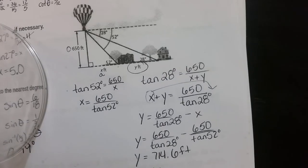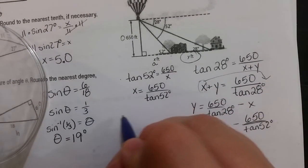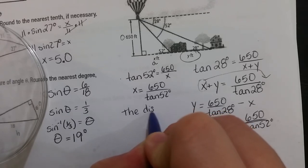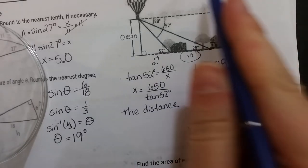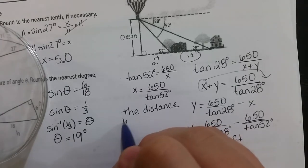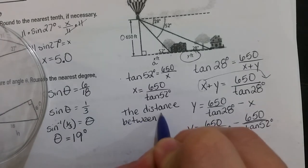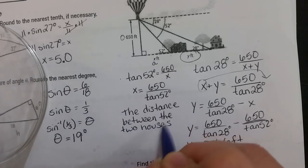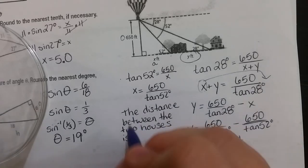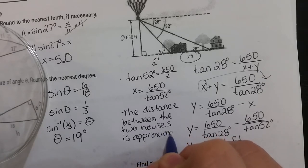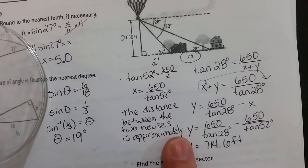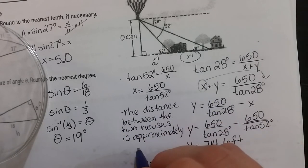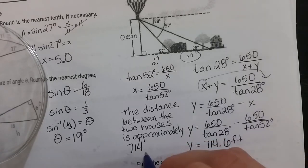And since it's a word problem, it's probably good to answer in words. The distance between the two houses is approximately—I say approximately because we rounded, but really it would be fine if you left this word out—714.6 feet.